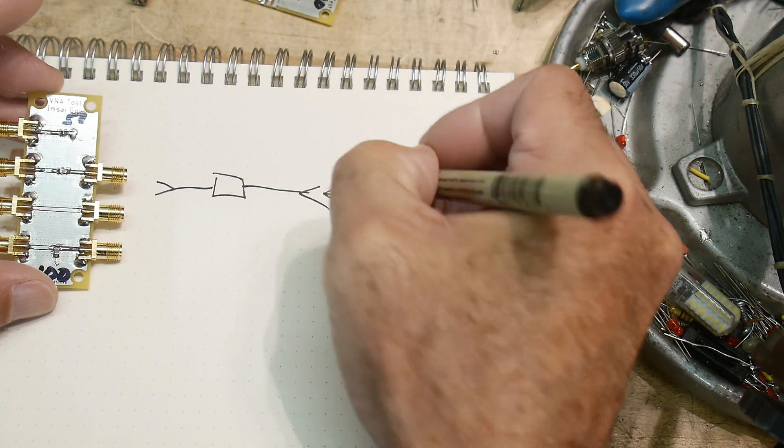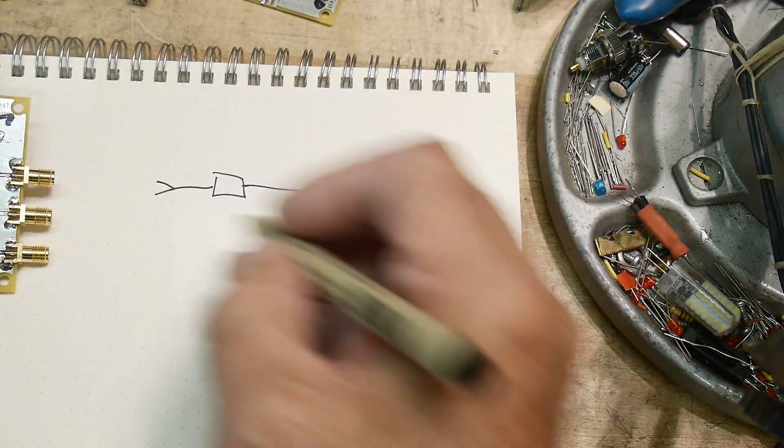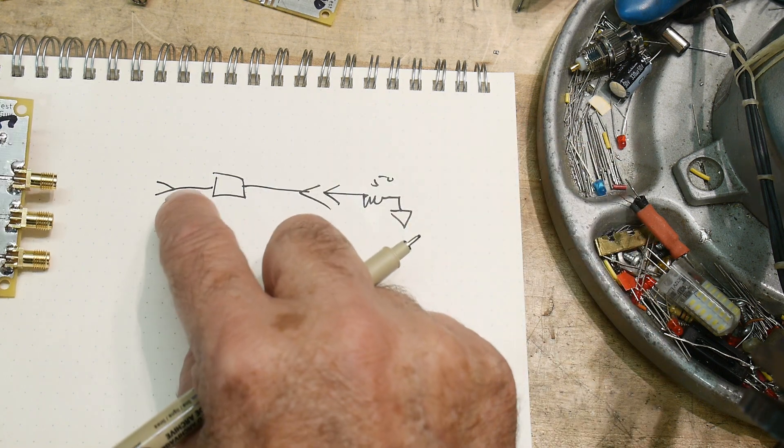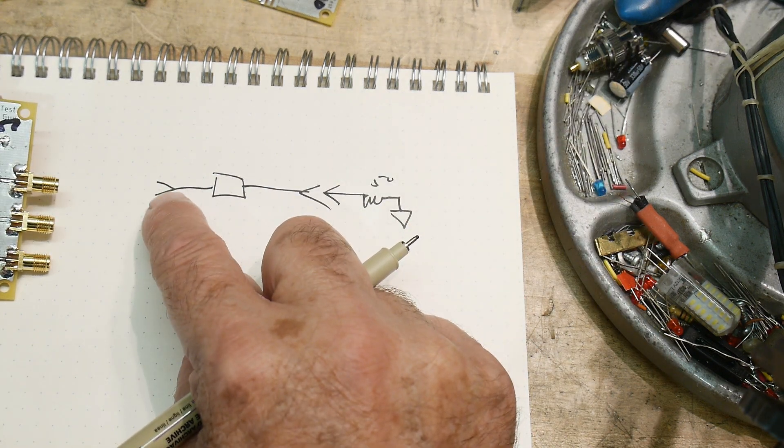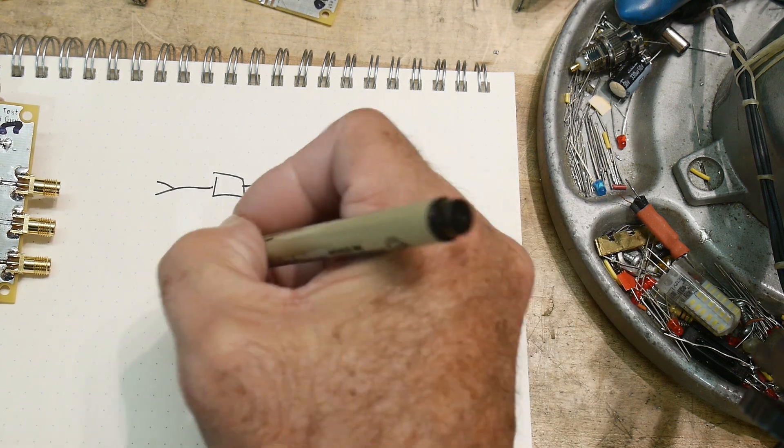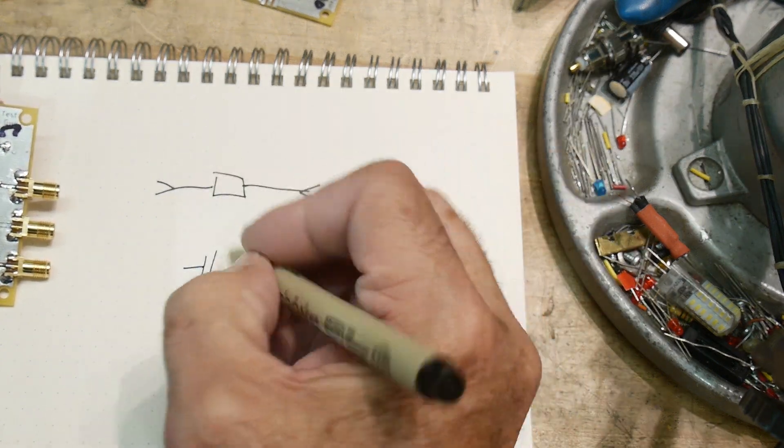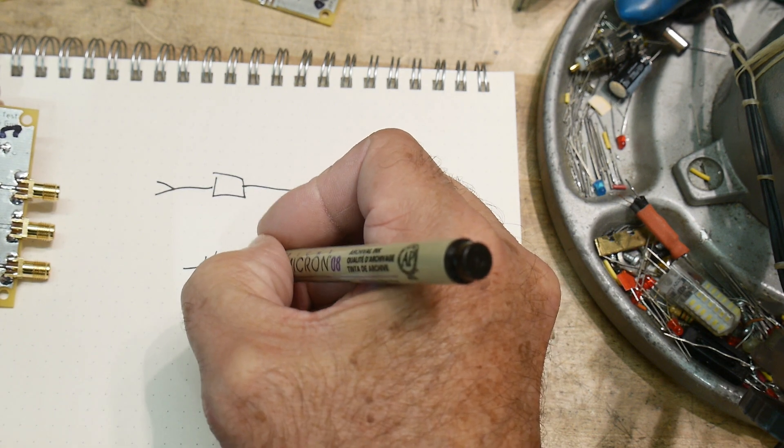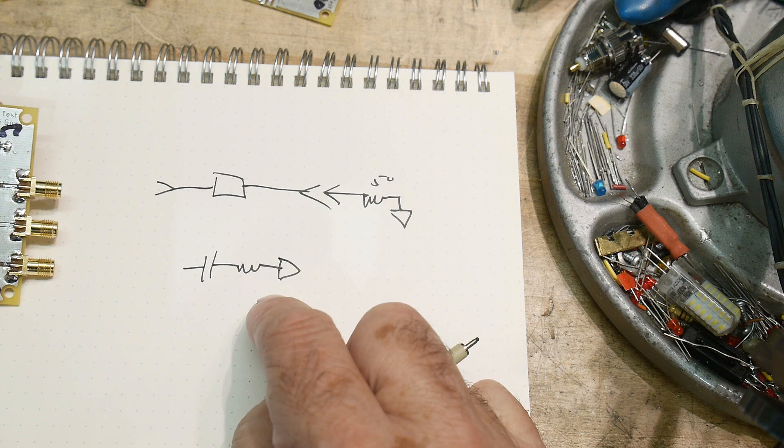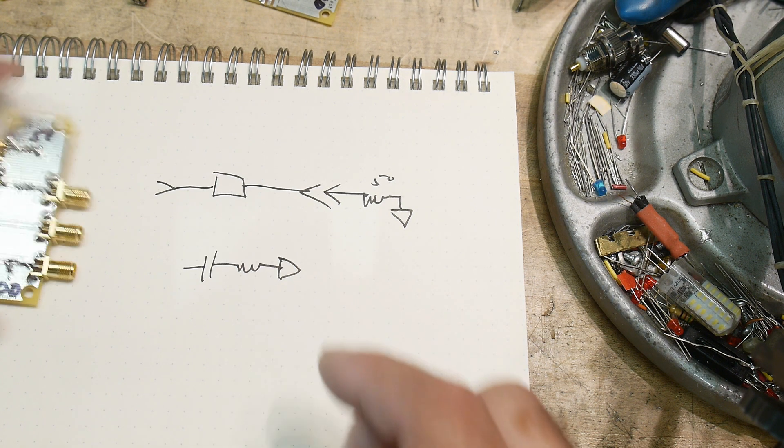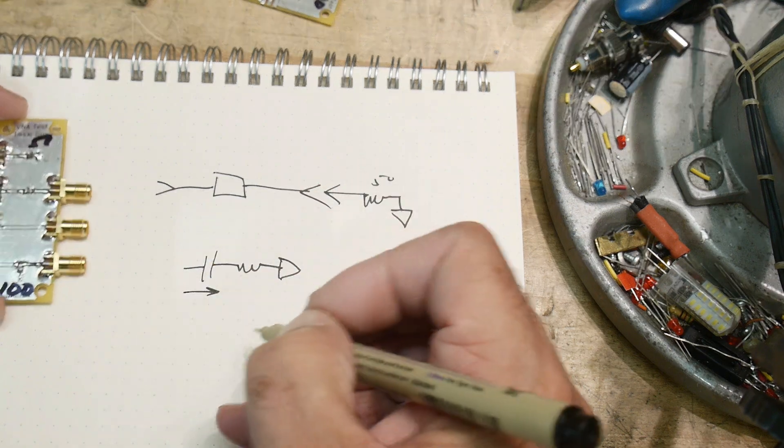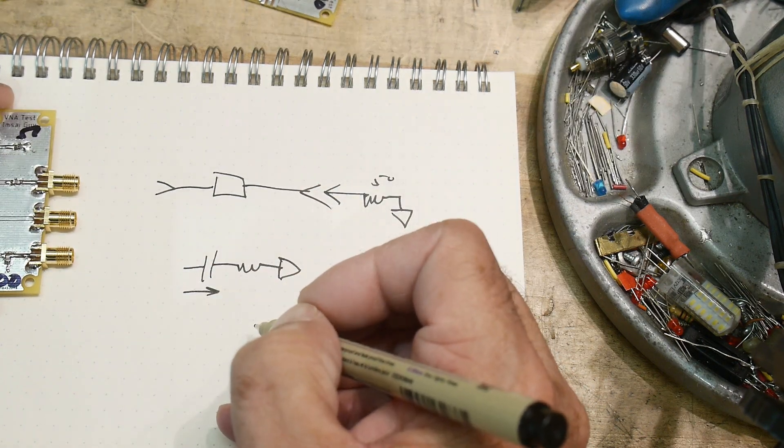So what that does is we basically have a capacitor in series. If the device under test is a capacitor, we have this. When we start out at low frequencies, it won't go through that capacitor - it just won't go - so it's going to look like an open.